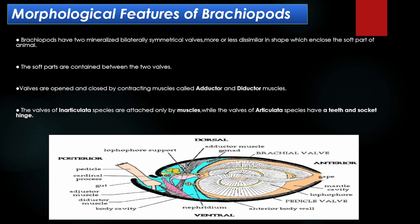Let's discuss the morphological features of Brachiopods. The larger valve is called the ventral valve, which contains teeth, and the smaller valve is called the brachial valve, which contains the socket. In Articulata, the two valves are united together along the hinge line by teeth and socket. In Inarticulata, the two valves lack articulation and are united by muscles. They collect food particles on a ciliated organ called the lophophore. Valves are opened and closed by contracting muscles called adductor and diductor muscles.